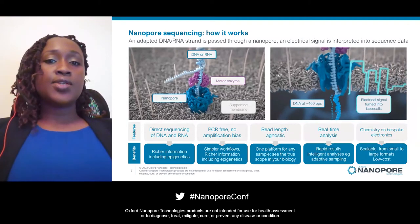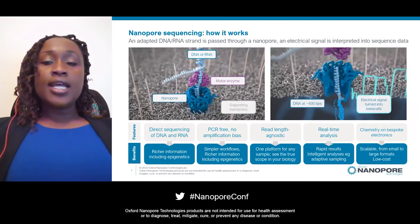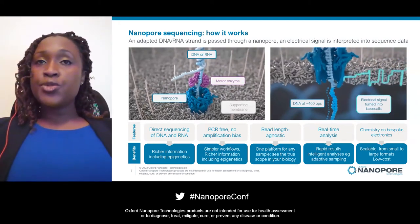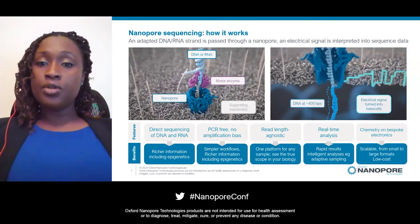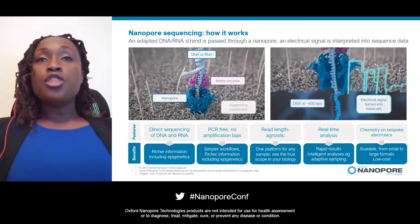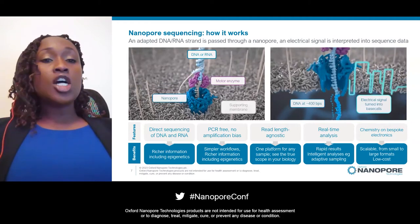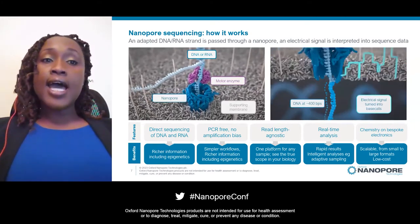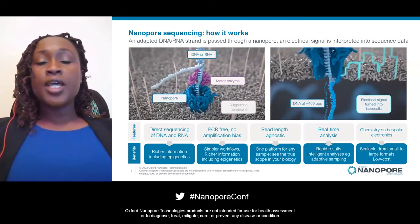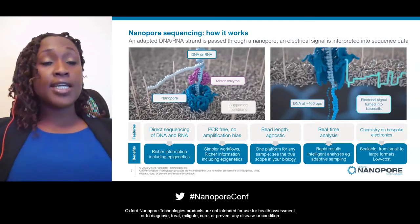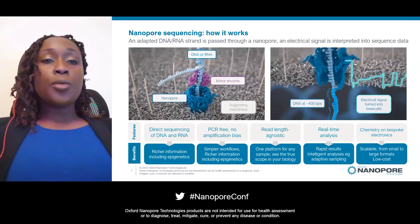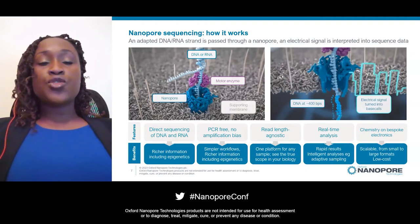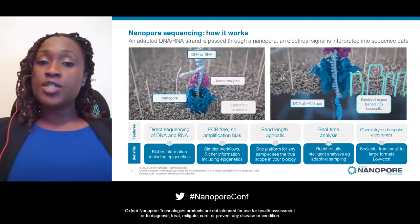Here in blue, you can see a Nanopore embedded in a supporting membrane. When an electrical potential is applied to the system, ions can flow through the Nanopore, and the current produced by this ion flow can then be measured. In purple, you can see the motor enzyme, which is bound to a DNA molecule. The motor enzyme is added during the library preparation phase, and it unzips the double-stranded molecule and controls the movement of one strand as it passes through the Nanopore. As the analyte's DNA or RNA passes through, it causes a distinct disruption in ion flow, measured on our devices and captured as an electrical signal. Our base calling software then interprets this signal and determines the sequence of the DNA or RNA strand. As soon as a strand has passed through a Nanopore, that Nanopore becomes free to start sequencing another strand.